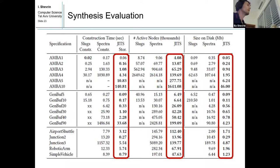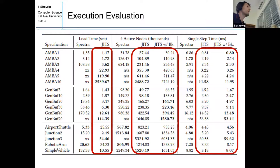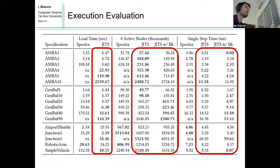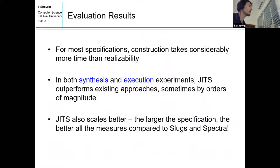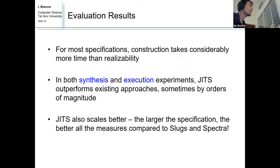In the execution evaluation, JITS also performs very well with regard to load time, and in most cases the number of active nodes is also favorable. During single step time, Spectra sometimes performs better, but JITS still performs very well in many cases even though it must perform more operations per step. In summary: for most specifications, construction takes considerably more time than realizability. In both synthesis and execution experiments, JITS outperforms other approaches, sometimes by orders of magnitude, and it scales better — the larger the specification, the better all measures compare to Slag and Spectra.